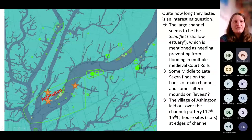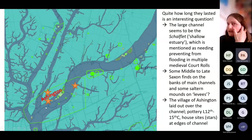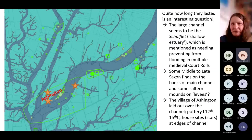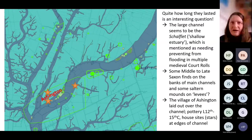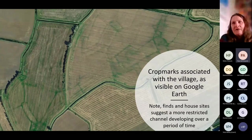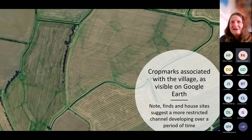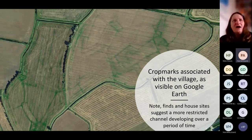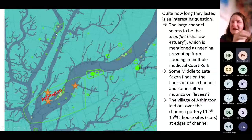Down here you can see the village of Ashington, which was laid over the junction of this major channel with some of the secondary roddens. Ashington is first mentioned around the 13th century and the pottery appears to be late 12th to 15th century. The house sites all appear to be either on the edge of that main channel or just away from it — potentially quite significant. There's a nice crop mark of Ashington visible on Google Earth, suggesting quite a lot of water management going on in this area, which fits with the very straight nature of some of the channels here.